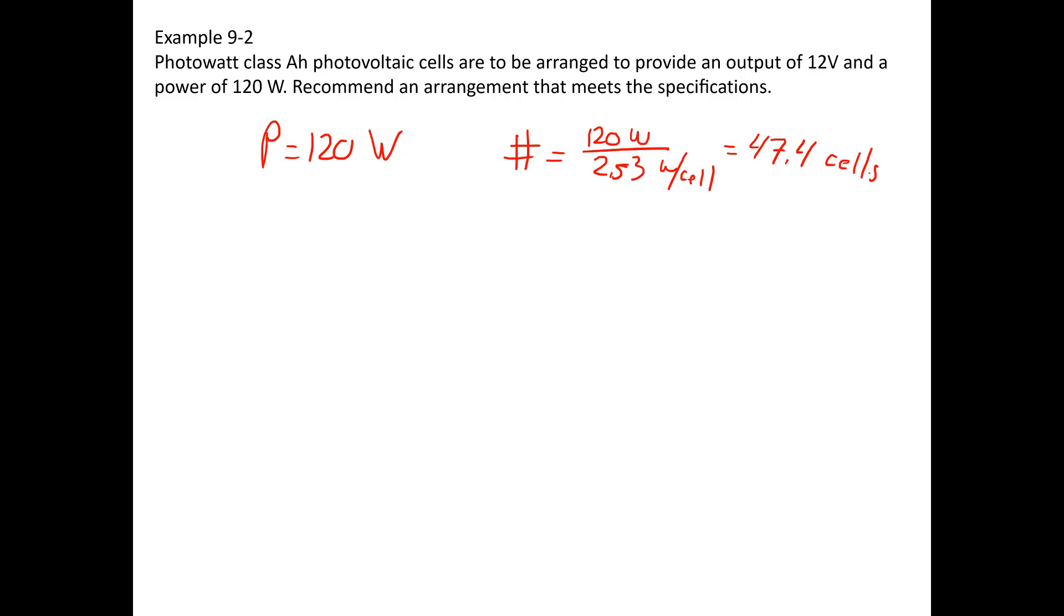What I first want to look at is how many cells do I need in series to get the voltage that I want. So in order to do that, let me compute the number of cells that I need in series. I would go ahead and take my 12 volts, divide that out by the fact that I know for maximum power I have 0.493 volts per cell, so that means I need 24.3 cells.